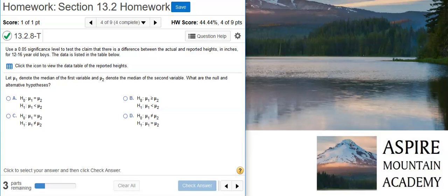Howdy, I'm Professor Curtis of Aspire Mountain Academy. Here with more statistics homework help. Today we're going to learn how to perform a sign hypothesis test of median heights. Here's our problem statement. Use a 5% significance level to test the claim that there's a difference between the actual and reported heights in inches for 12 to 16 year old boys. The data is listed in the table below.